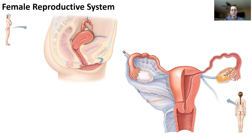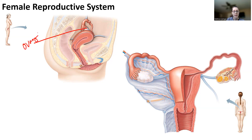So here we have a sagittally sectioned female pelvis, and then we have basically the female reproductive system that had been taken out of the body. The ovary is the main organ, and that leads into basically a duct or tube system, which includes the fallopian tube, which is the part that's attached to the uterus right here.